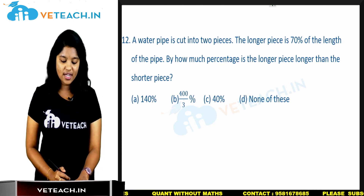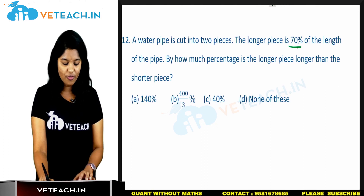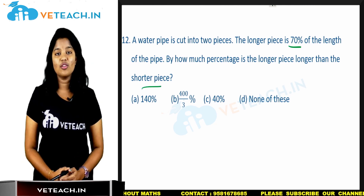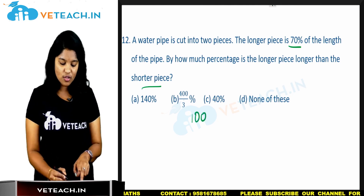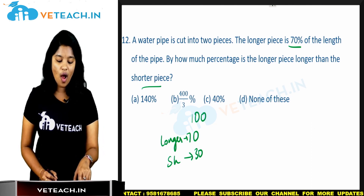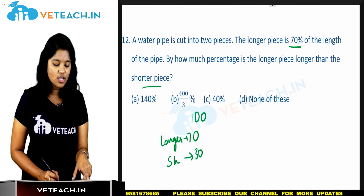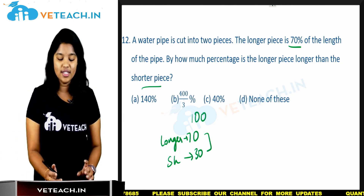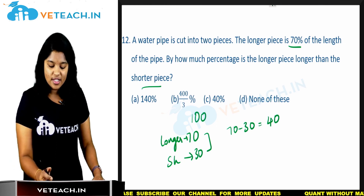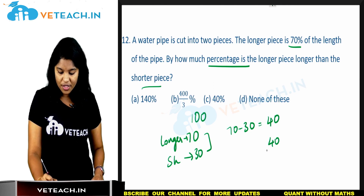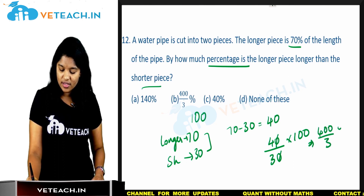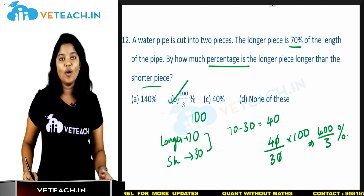Next question: a water pipe is cut into two pieces. The longer pipe is 70% of the total length. By how much percentage is the longer piece longer than the shorter piece? We don't know the total length, so take it as 100. Longer piece = 70, shorter piece = 30. Longer is longer than shorter by 70 − 30 = 40. Percentage = 40/30 × 100 = 400/3%. Option B is our correct answer.